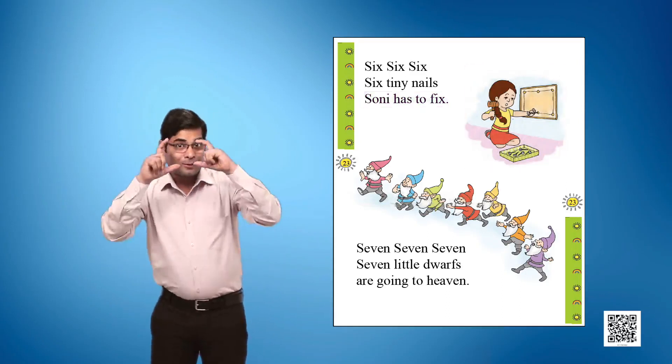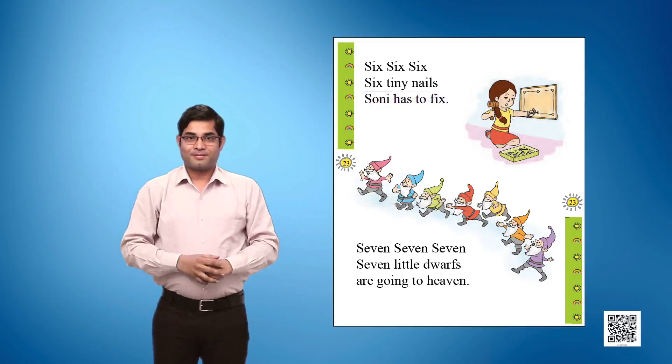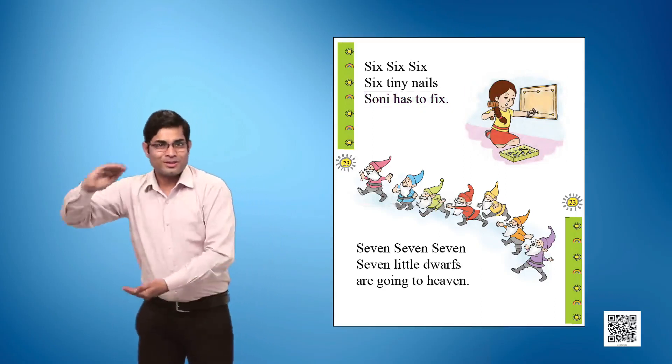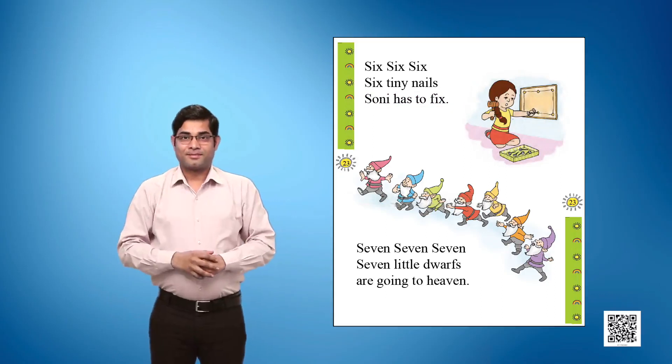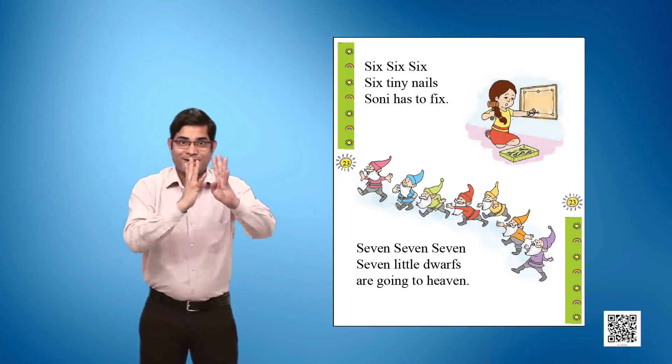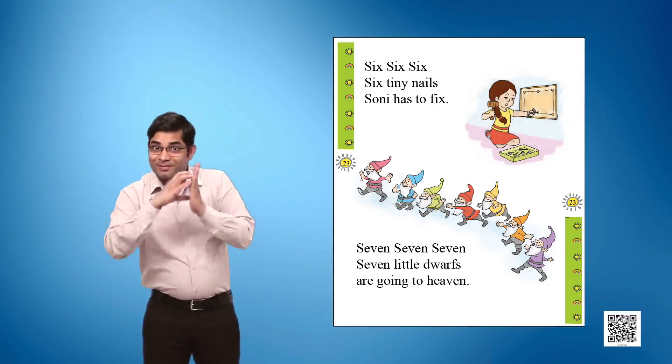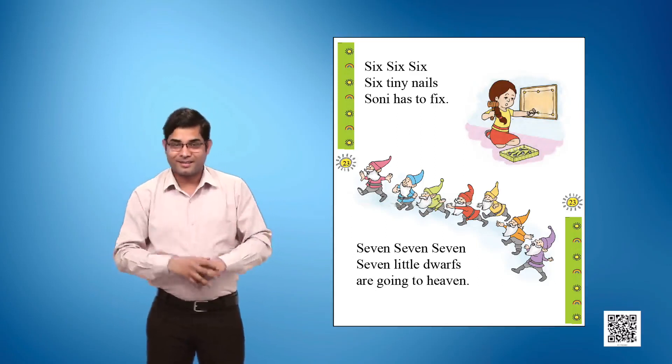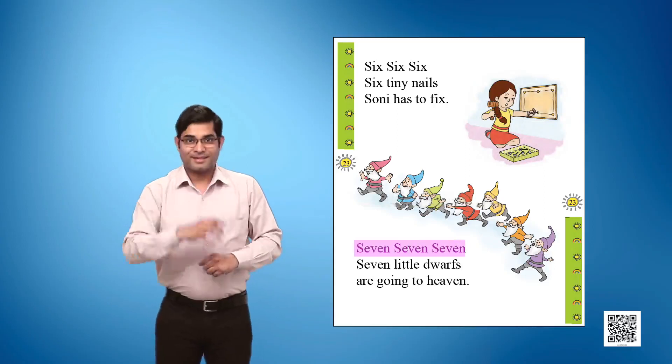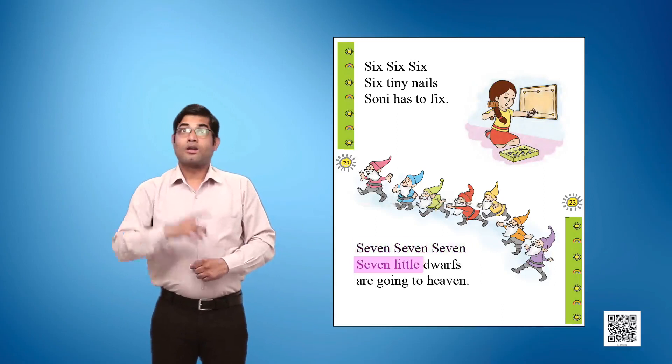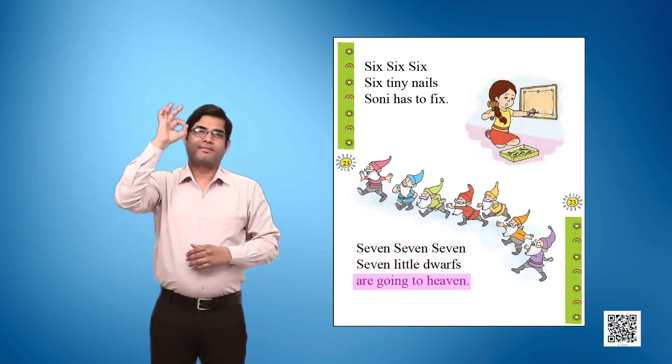Picture 2 shows seven dwarfs walking in a line. Text given: Seven Seven Seven, Seven little dwarfs are going to heaven.